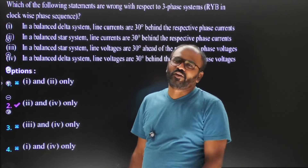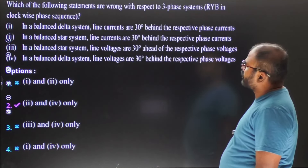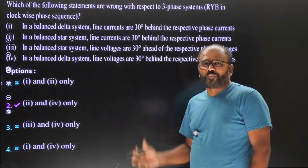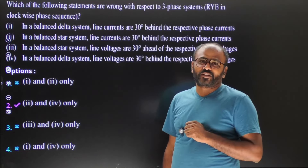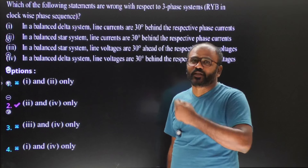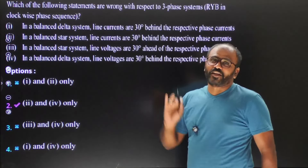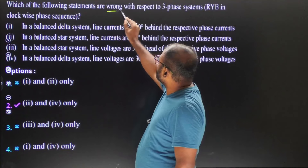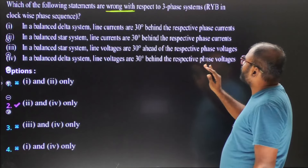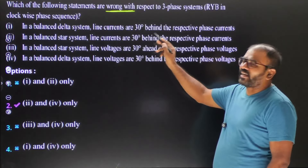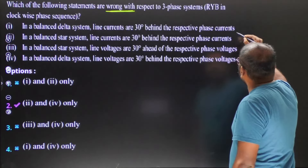There are two questions given from three-phase circuits. The first question asks: which of the following statements are wrong with respect to three-phase system? Many questions in this paper ask to pick the incorrect statement, so you must read carefully. This question asks to pick the wrong statement — not the correct one. Statement one says: in a balanced delta system, line currents are thirty degrees behind the respective phase currents — meaning line current lags phase current by thirty degrees. This is a correct statement.